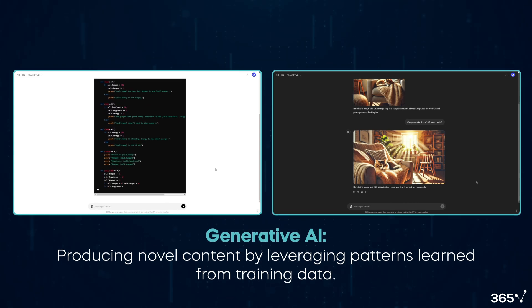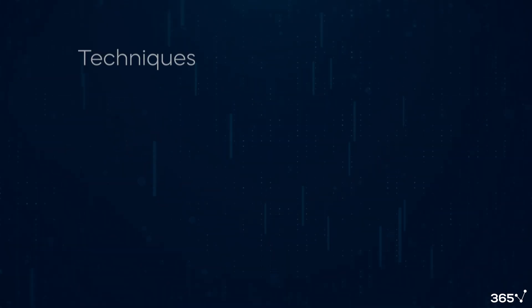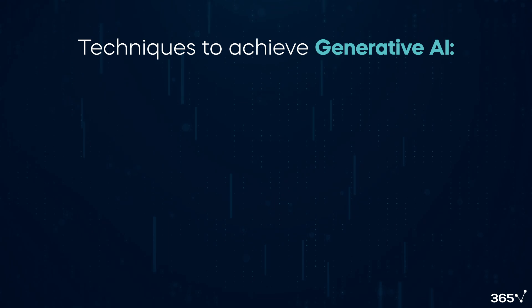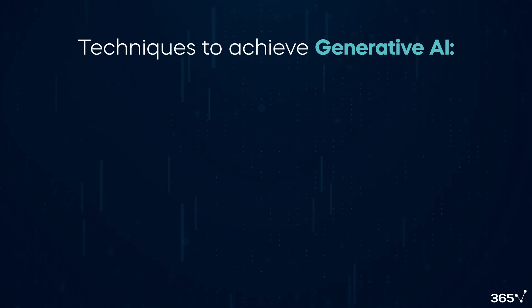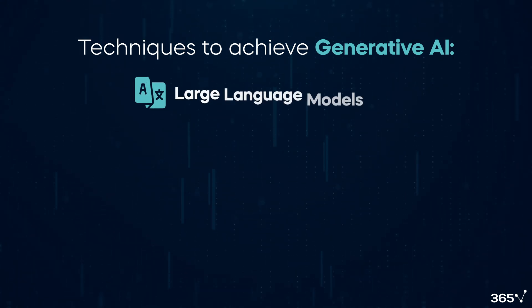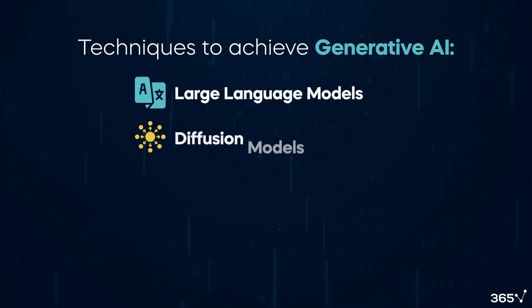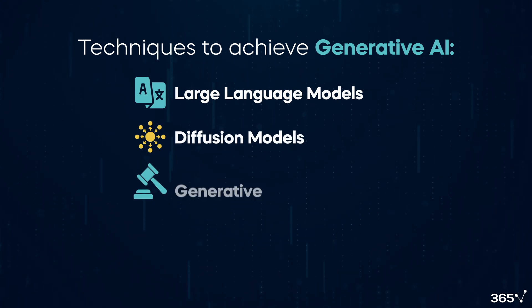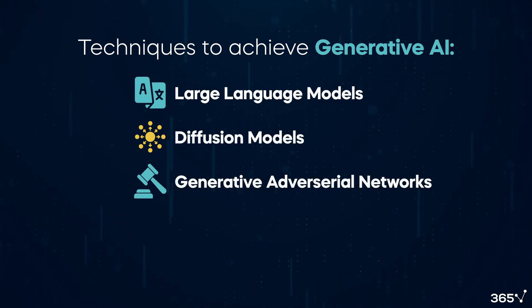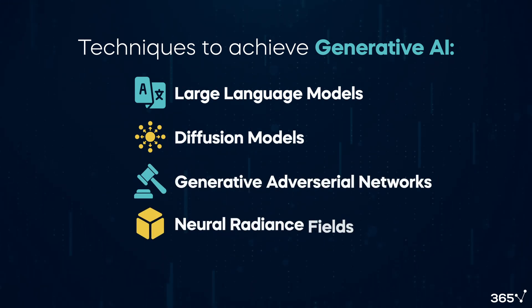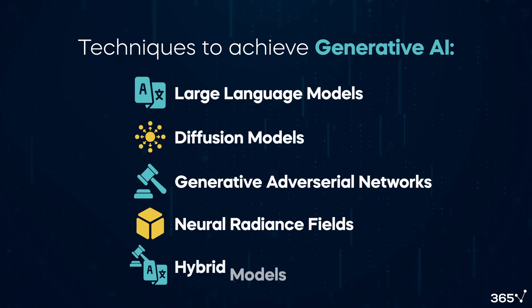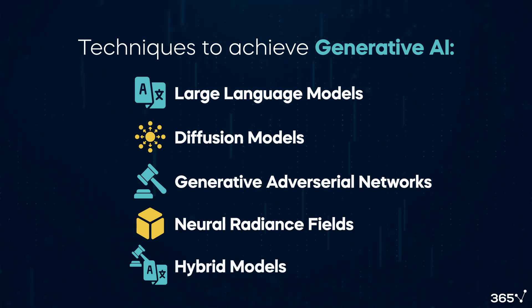AI developers can use several different techniques to achieve Generative AI, including large language models, diffusion models, generative adversarial networks, neural radiance fields, and hybrid models are also possible.